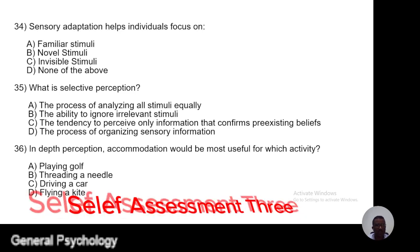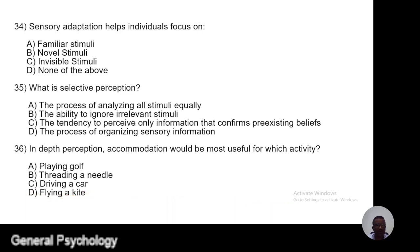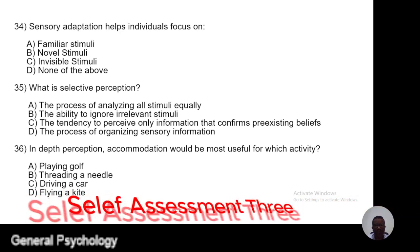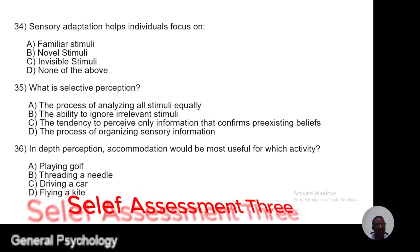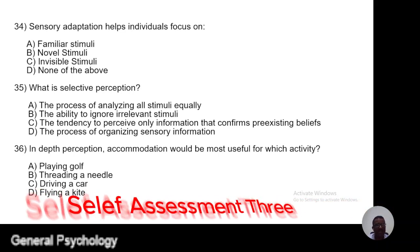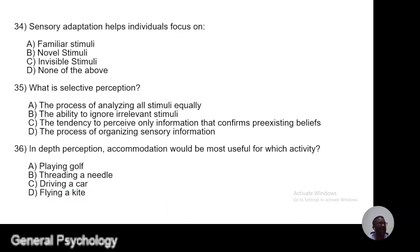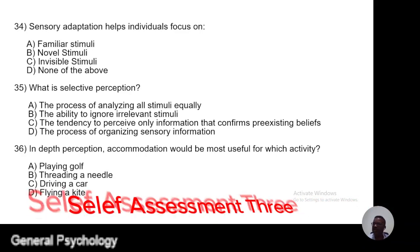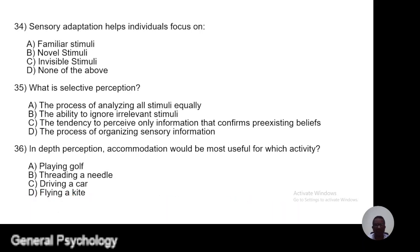Question 34. Sensory adaptation helps individuals focus on: A, familiar stimuli; B, novel stimuli; C, invisible stimuli; D, none of the other.